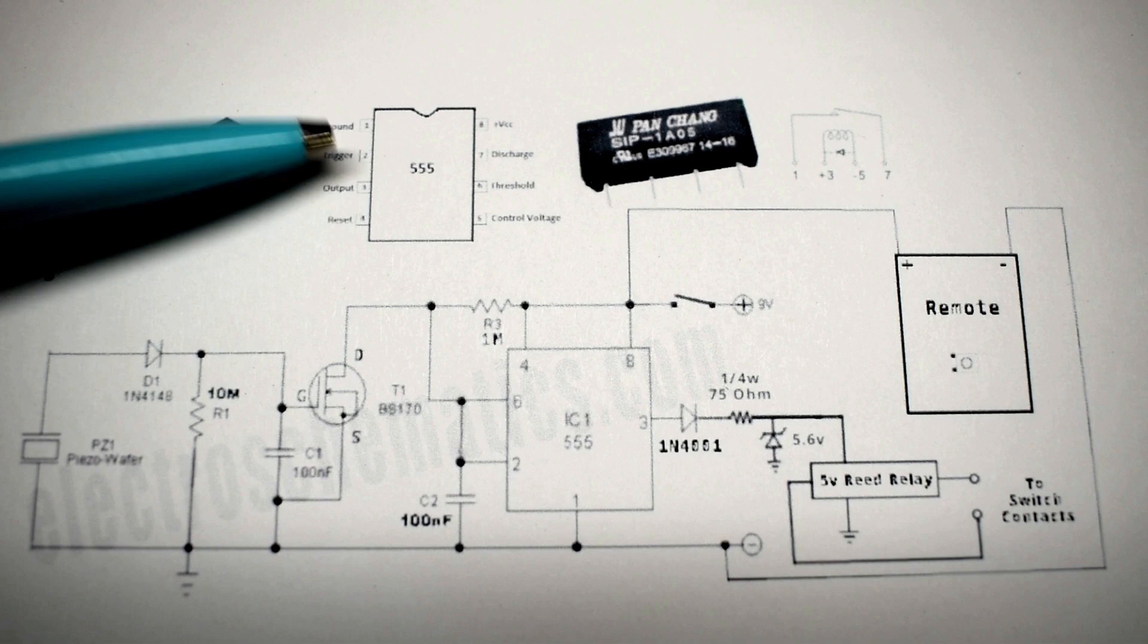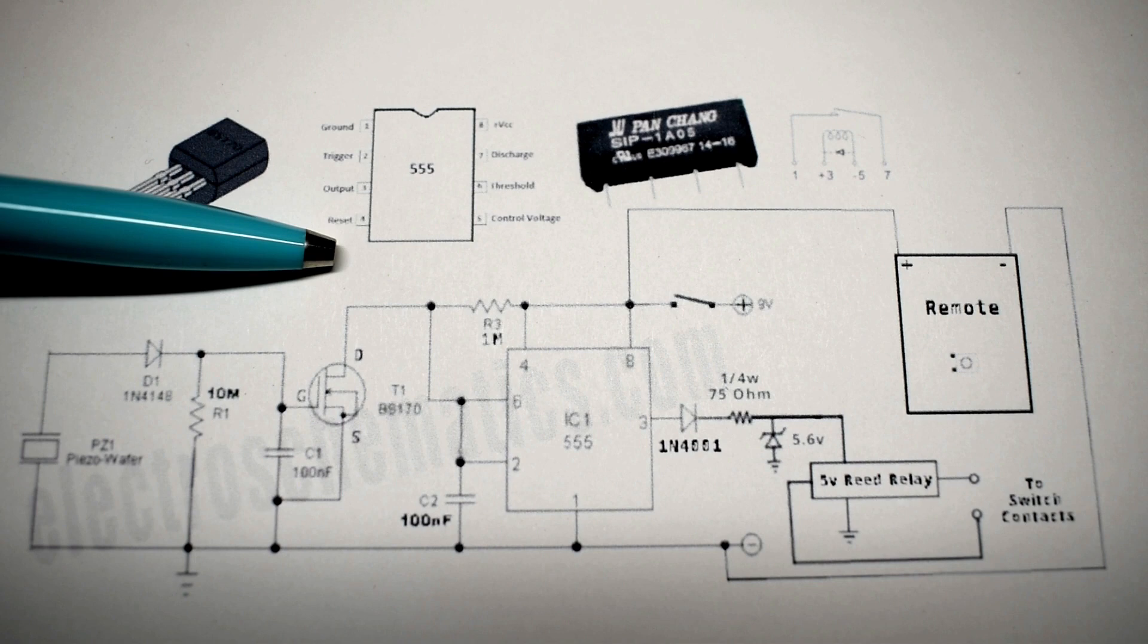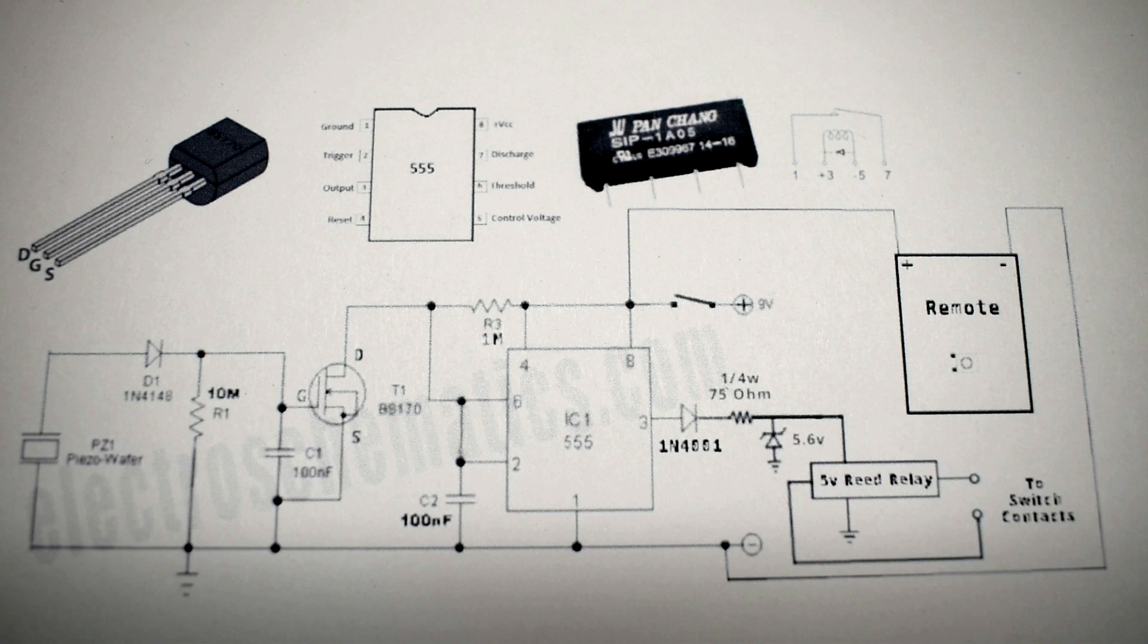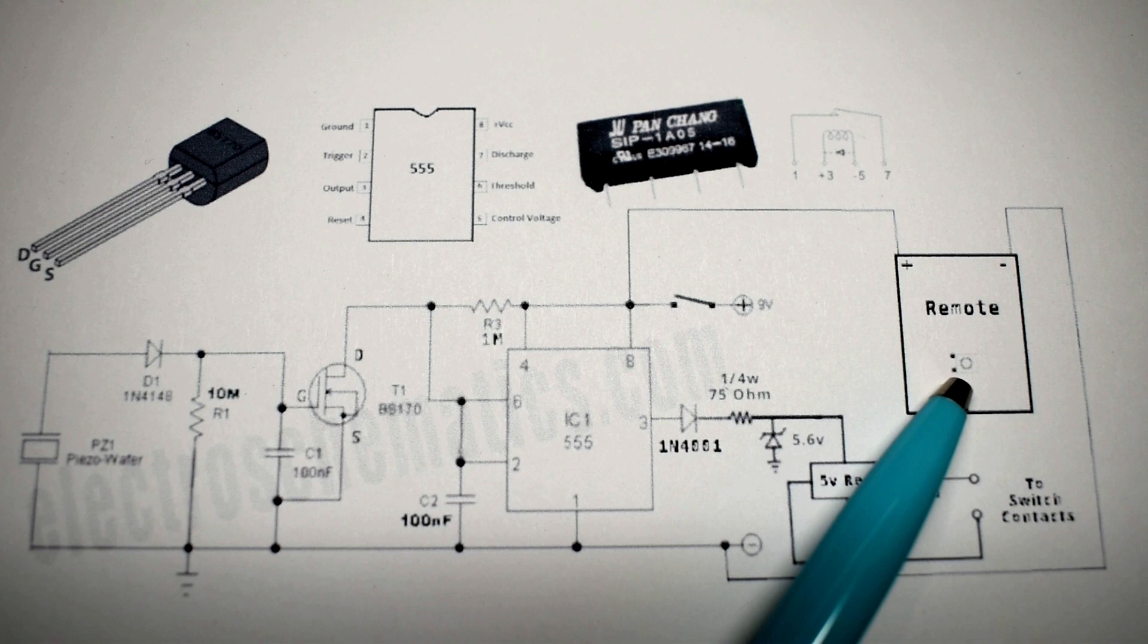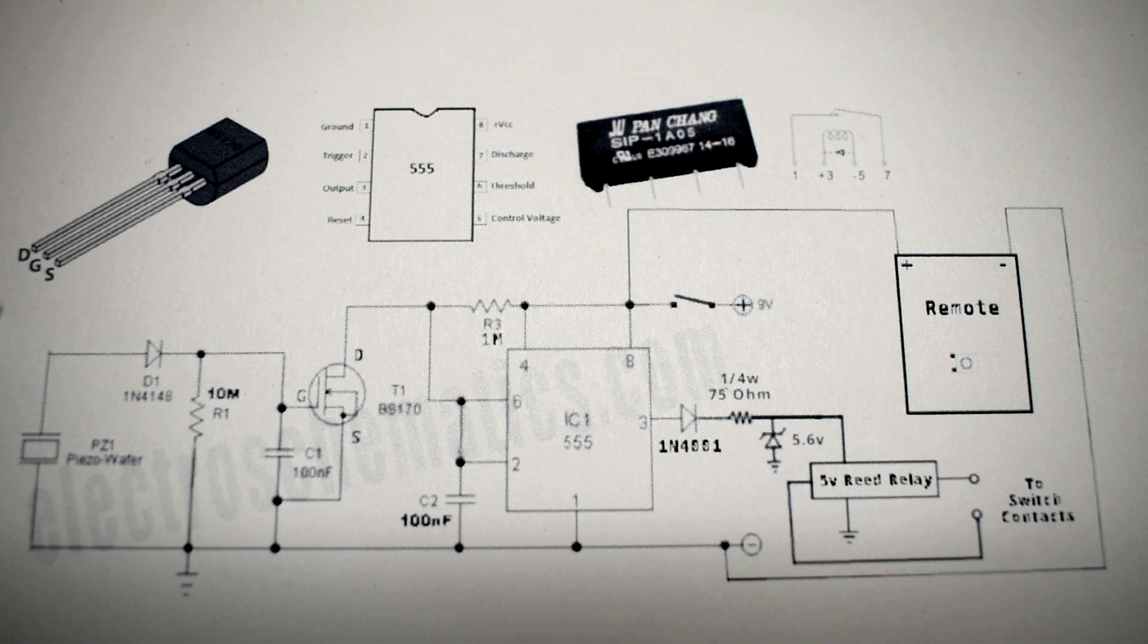Right over here is the piezo wafer. Over here is the IC1, which is a 555 timer, and you can see the pinout. There's a notch at the top. Pin 1 is over here. Pin 4 is at the bottom. Pin 5, and it wraps all the way around to pin 8. This component at the top is a reed relay, and you don't have to use the exact same one, but that component is right over here on the schematic, and of course, the remote control that you're going to be tapping into.